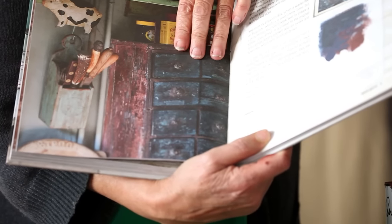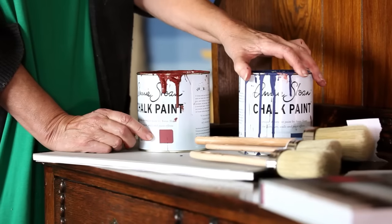It's very textured, it's worn in places. I've got Primer Red and I've got Napoleonic Blue. So to get this rustic look, I'm going to use my Bristle brush.